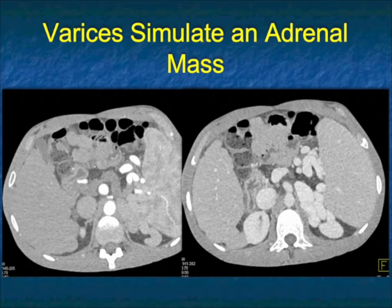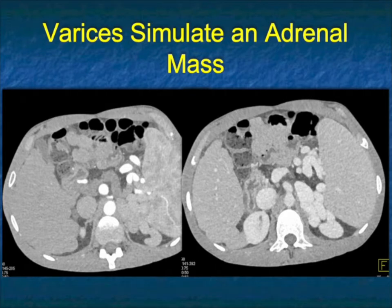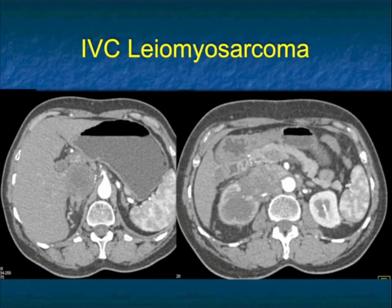Sometimes things can confuse you. On one image there's fullness by the left adrenal bed, but if you look carefully, the patient has cirrhosis and splenomegaly — what you were looking at were multiple large varices. I've occasionally seen large varices confused with an adrenal mass. I've also seen a diverticulum off the fundus of the stomach confused with an adrenal mass, though usually confused with an adrenal cyst or adenoma rather than a carcinoma.